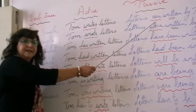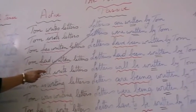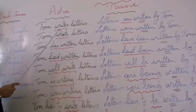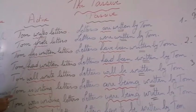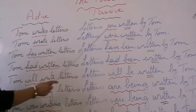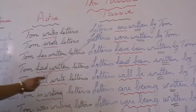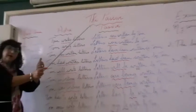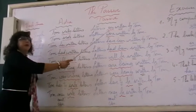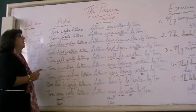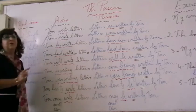So: letters are written by Tom. To summarize: number one, find the object and put it at the beginning. Number two, look at the verb tense and put 'to be' in the same tense. Number three, find the past participle of the verb. Number four, put 'by' and the doer of the action if it's important to mention it.